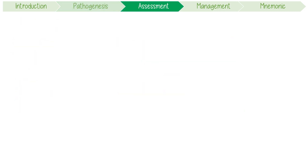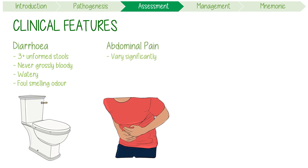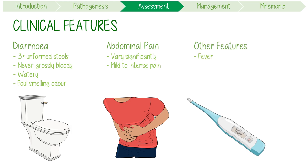Let's focus on the main clinical features. A new onset of diarrhea, often defined as three or more unformed stools in 24 hours, is the most important and common complaint. The stools are never grossly bloody, but are characteristically watery, with a characteristic foul-smelling odour. Abdominal pain can vary significantly from mild discomfort to intense pain. Other features like fever, nausea, and vomiting can also be present.